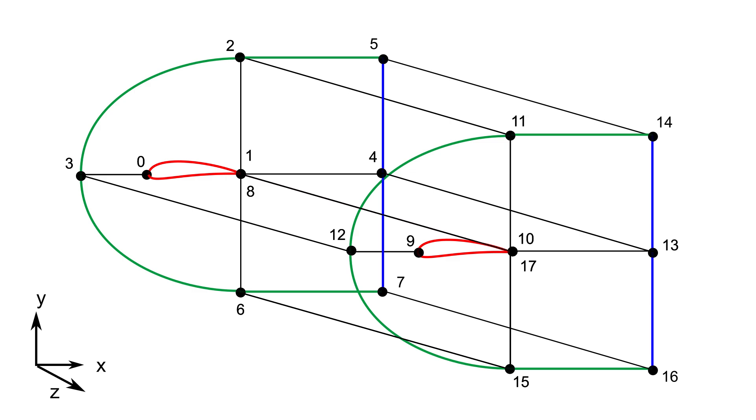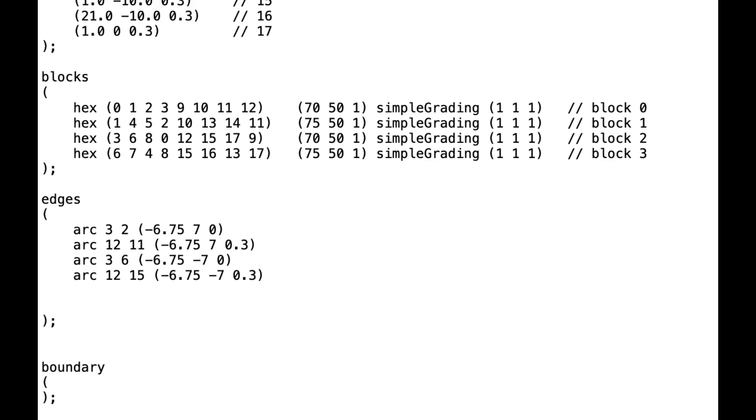After finishing the block definitions, I'll show you how to construct the edge section. By default, OpenFOAM treats the edge between any two vertices as a straight line, so we need to define any other edges manually. In this case, the inlet of the domain has four arcs, so we will define them as arcs using the start and end vertex by writing its number along with a coordinate of the third point on the arc as shown here.